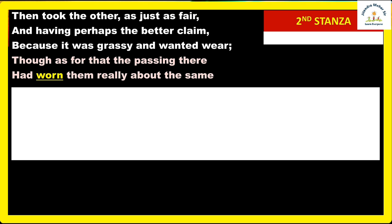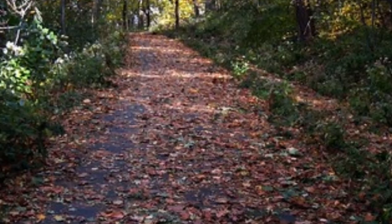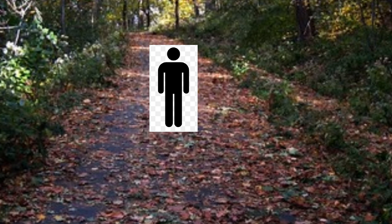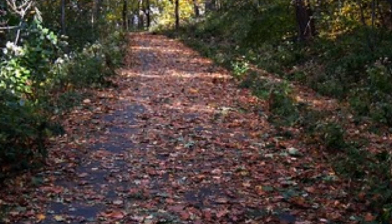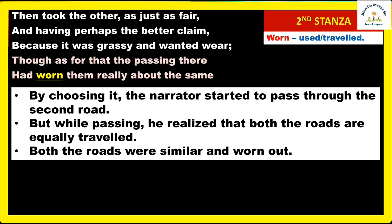'Though as for that, the passing there had worn them really about the same' — by choosing the second road and starting to walk on it, the narrator began to realize that both roads are actually equally traveled. After walking a little while on the second road, he noticed that it had been walked on by many people as well. So both roads were similar and worn out — equally traveled by others.